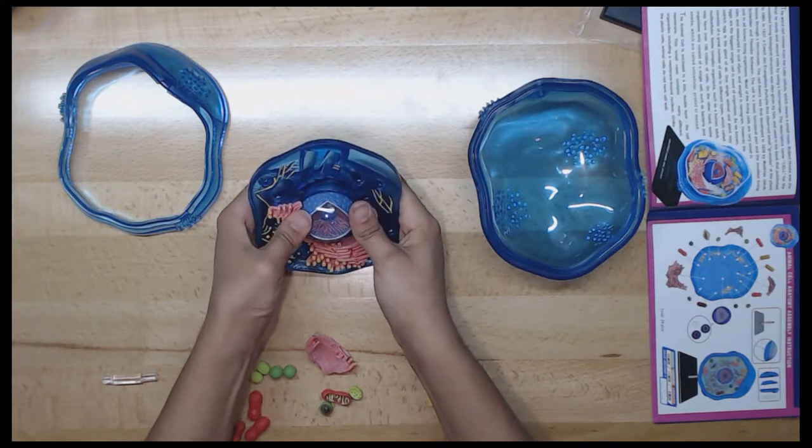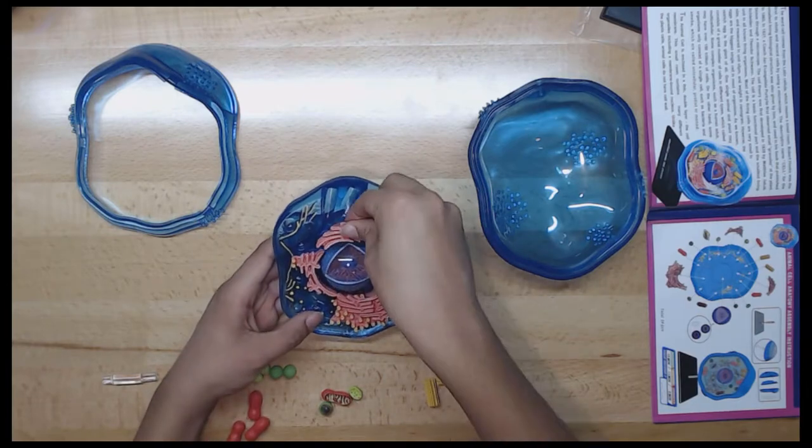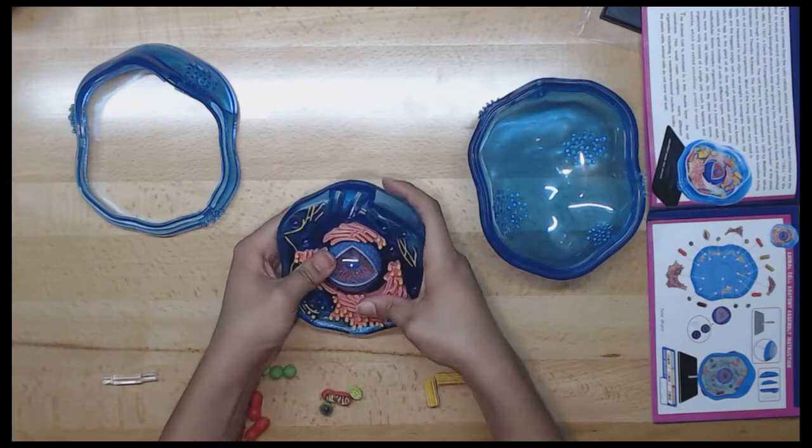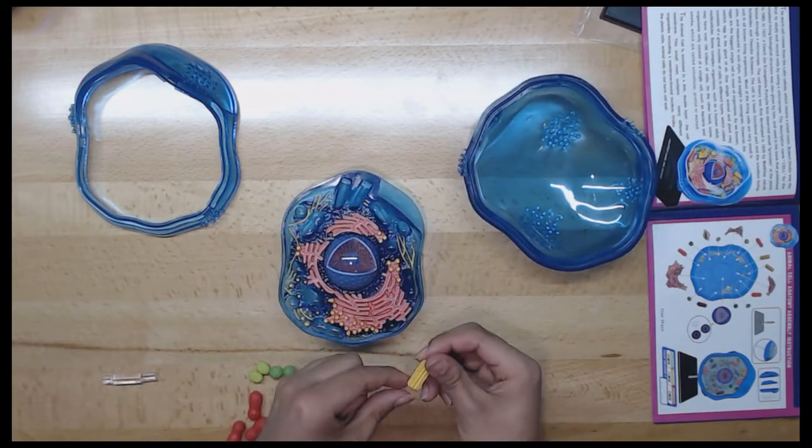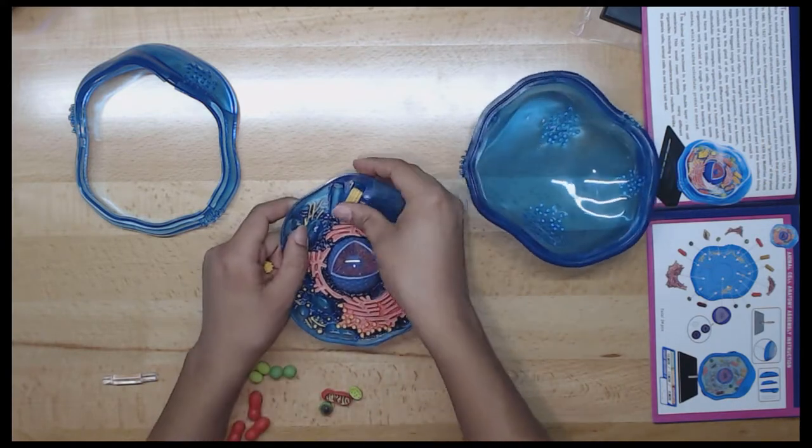Question: What does an animal cell have that a plant cell doesn't have? Animal cells have a structure called centriole, which plays a very important part in animal cell division, but plant cells don't have these.